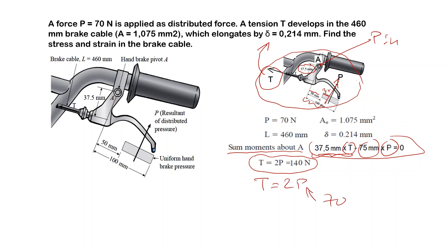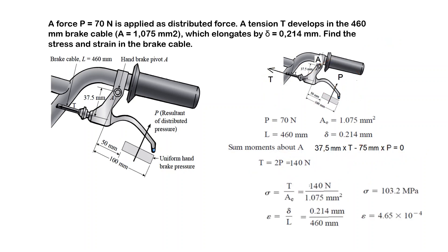Next step is very easy. The stress in the cable is force divided by the area: 140 N divided by the given area gives a tensile stress of 130 MPa in the cable. The strain: the elongation is 0.214 mm divided by the initial length of the cable gives you epsilon.